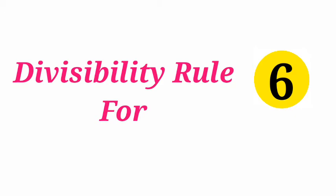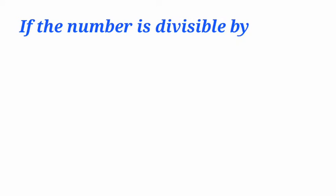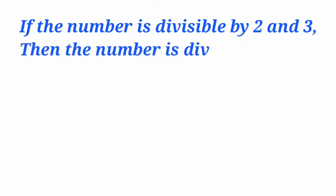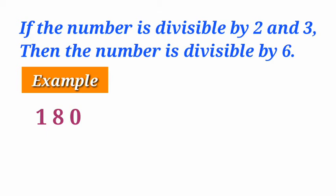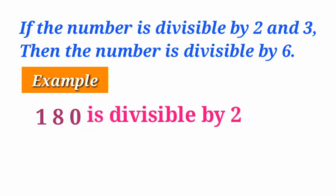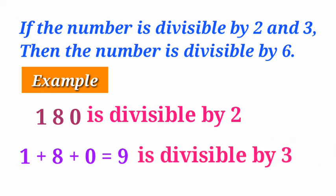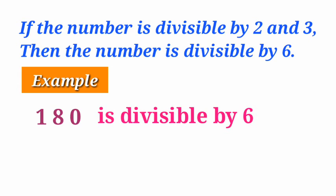Divisibility rule for 6. If the number is divisible by both 2 and 3, then the given number is divisible by 6. For example, 180. The last digit is 0, so as per the divisibility rule, this number is divisible by 2. Now let us check divisibility by 3: 1 plus 8 plus 0 is equal to 9. Since 9 is divisible by 3, the number 180 is divisible by both 2 and 3, so it is divisible by 6.